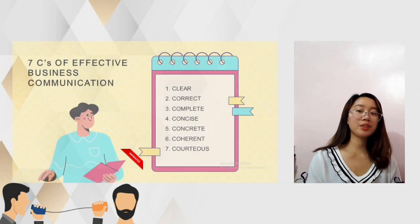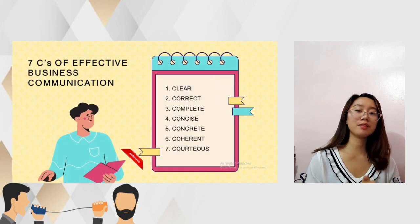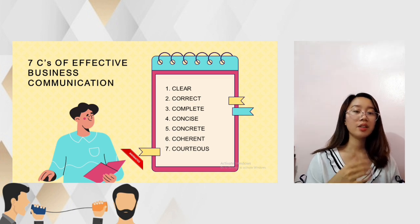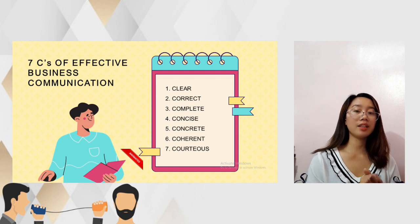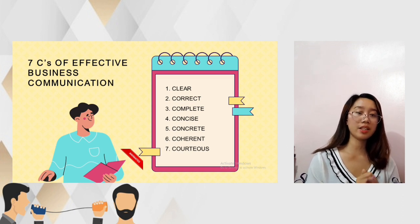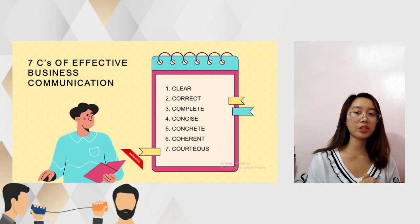Let us proceed to the 7 C's of effective business communication. These 7 C's have been developed to ensure that we communicate with our peers effectively and efficiently. Communication must be clear, correct, complete, concise, concrete, coherent, and courteous for it to be effective.